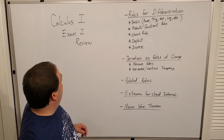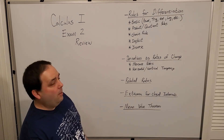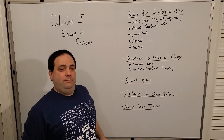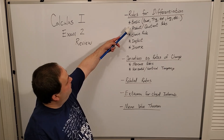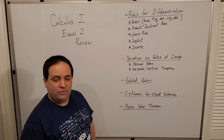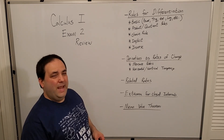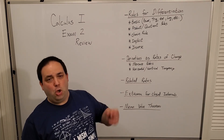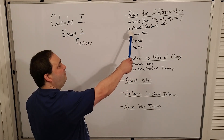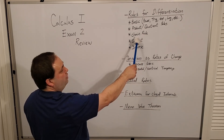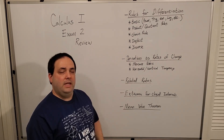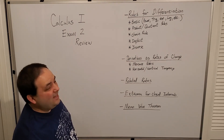So, Calculus 1 Exam 2 Review. What we're going to be talking about are the rules — the shortcuts — for differentiation. Those entail all of the basic ones: power rule, all of the trig rules, your exponent and log rules, inverse trig rules, and things like that. All of those basic singular function rules that you should know quickly so that you can get through these problems efficiently. Then you have your structural rules: product rule, quotient rule, chain rule, and the advanced structures of using them implicitly or in an inverse fashion.